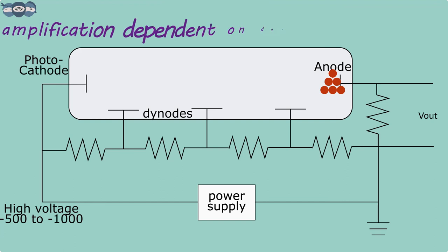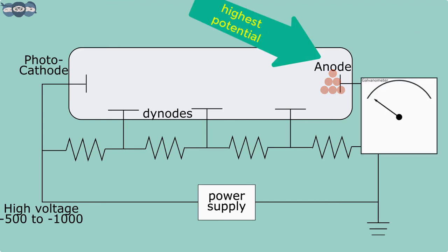The amplification is dependent on the number of dynodes and the accelerating voltage. Finally, these photoelectrons hit the anode, which is at the highest potential compared to all other electrodes, and the photocurrent is set up.